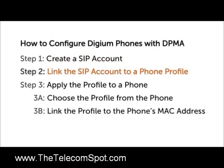Step two is to link the SIP account to a phone profile in resdigiumphone.conf. The phone profile contains the phone-specific settings that are not exposed in sip.conf. Step three is to associate the profile to an actual phone. Once the profile has been associated, the phone is able to fetch its configuration from the server automatically.